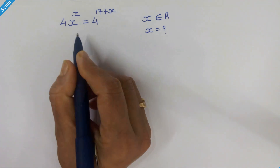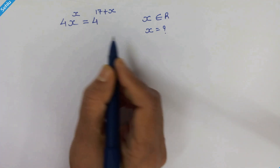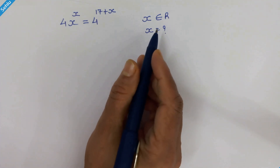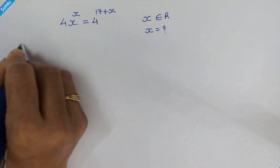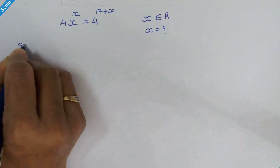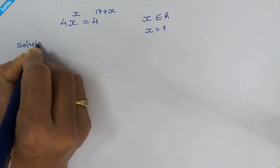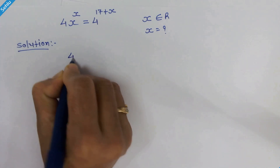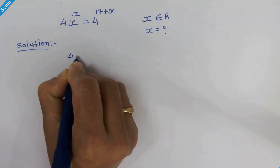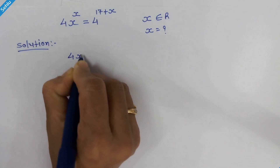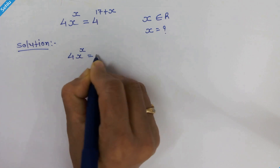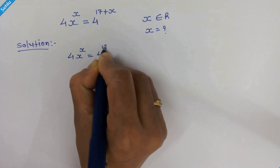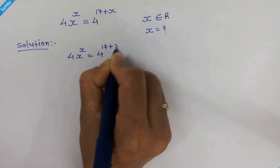Hello friends, it's a nice exponential equation and we will find the real value of x. So let's start. Our equation is 4 times x raised to x is equal to 4 raised to 17 plus x.